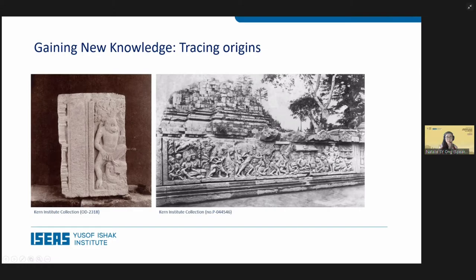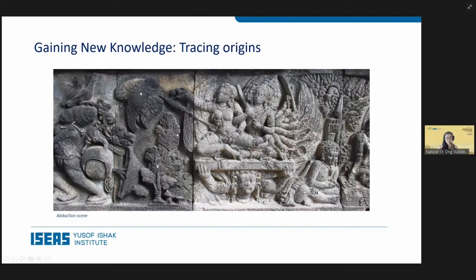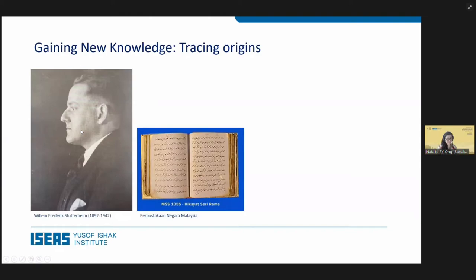Of course, this is where they ran into problems. They found quite a number of episodes that were not spoken of in the Indian Ramayana, such as this scene where someone is being crowned, and another scene where Sita is giving her ring to Hanuman. This is where the question arises: where did these episodes come from?